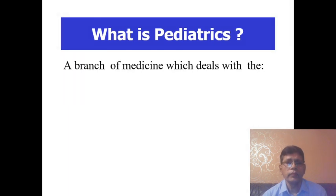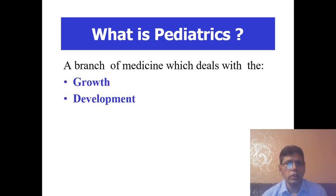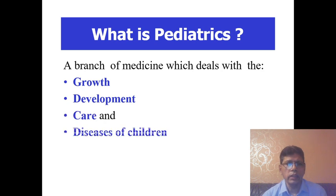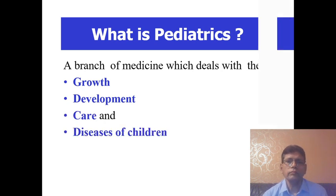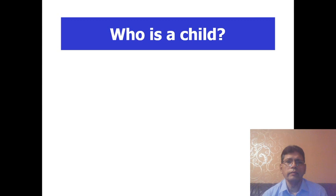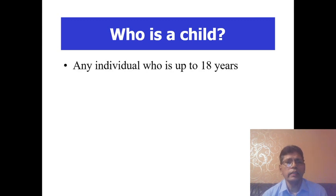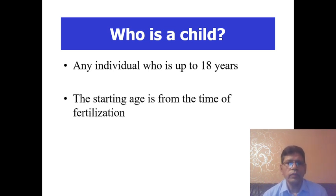What is pediatrics? This is a branch of medicine which deals with growth, development, care, and disease of children. Who is a child? A child is any individual who is up to the age of 18 years. The starting age is from the time of fertilization, not just after birth.